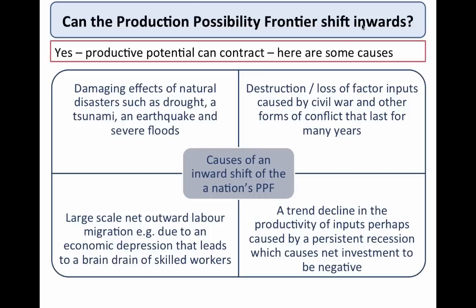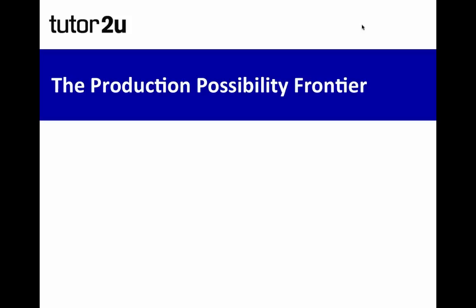Another cause of an inward shift in the PPF is persistent civil war. One thinks, for example, of the last four years in Syria and what that's done to the economy. Internal conflict and political instability can cause damaging economic consequences. You might also have out-migration of labour — in countries where unemployment is persistently high, younger workers often leave in search of work, as seen in Greece and Spain. If that out-migration is sufficiently large scale, it can have a significant effect on a country's productive potential.